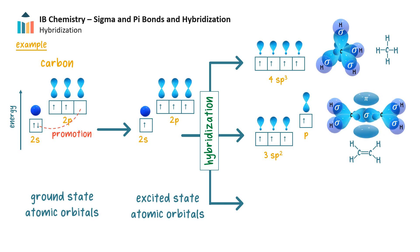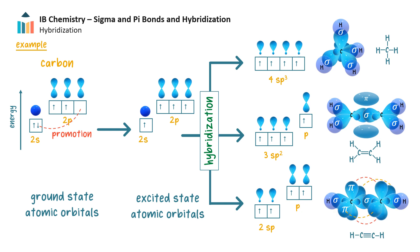The two lobes of the pi bond are above and below the plane of the molecule. When the s orbital and only one of the p orbitals mix, they form two equivalent hybrid sp orbitals of equal energy. Their energy is slightly lower than the two remaining unhybridized p orbitals. In ethyne, each carbon atom is sp-hybridized. One sp orbital in each atom forms a sigma bond to hydrogen, and the remaining sp orbitals overlap to form a carbon-carbon sigma bond. There are two electron domains around each carbon atom, forming a linear molecular shape.